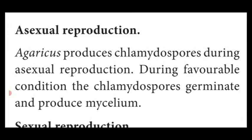During the favorable season, chlamydospores develop into a new mycelium. Chlamydospores are any cells which shrink and the cell content is modified into an oval-shaped structure during unfavorable conditions. During the favorable season, these chlamydospores develop into new Agaricus mycelium. That type of reproduction is called asexual reproduction.